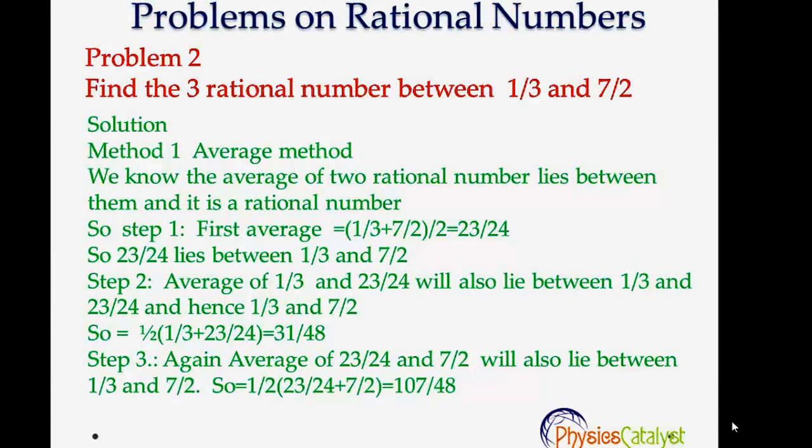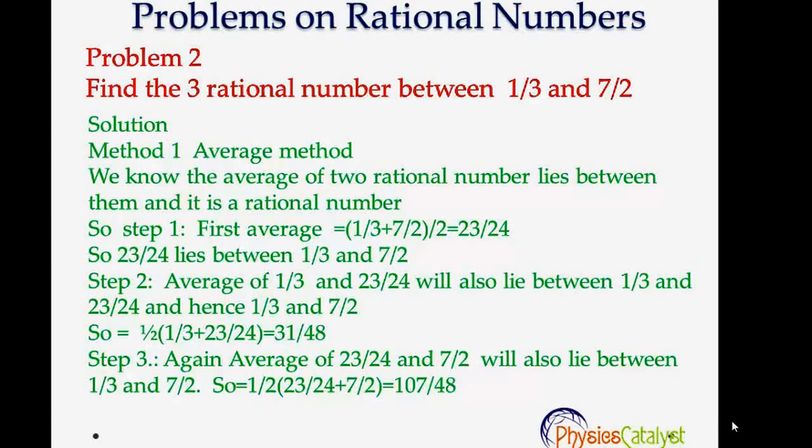Again, the average of 1/3 and 23/24 will also lie between 1/3 and 23/24. So calculating the average, we get 31/48.